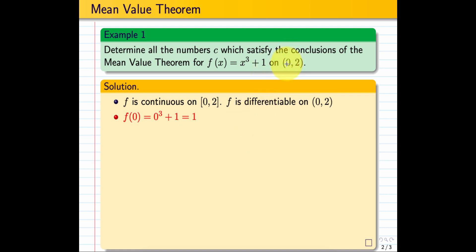First, find f(0). Substitute 0 into x. We have 0³ plus 1 equals 1. Then we find f(2). f(2) is 2³ plus 1 equals 8 plus 1 equals 9. This is f(b), this is f(a). So [f(b) minus f(a)] over [b minus a] equals [9 minus 1] over 2 equals 8 over 2 equals 4.